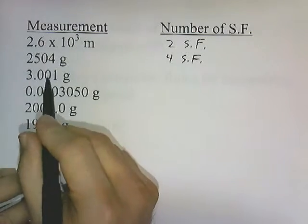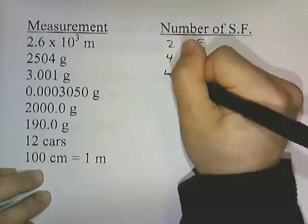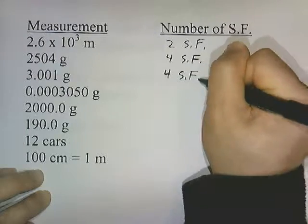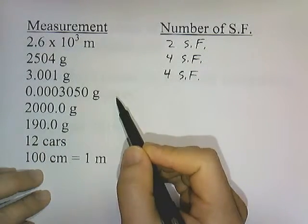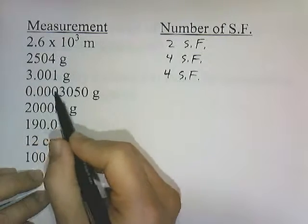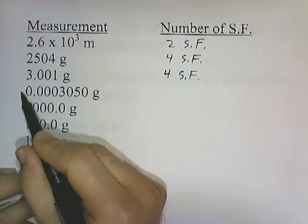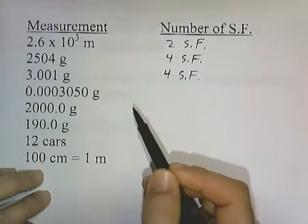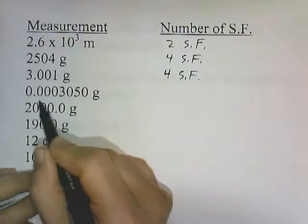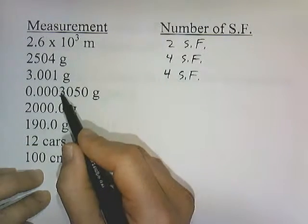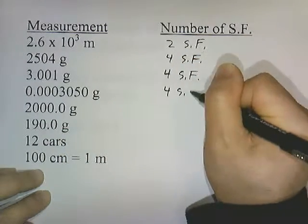3.001 — zeros in between, they count: 4 significant figures. 0.0003050 grams — these zeros are behind a decimal but not behind a number, so they don't count. This zero is behind a number and behind the decimal, so it counts: 4 significant figures.